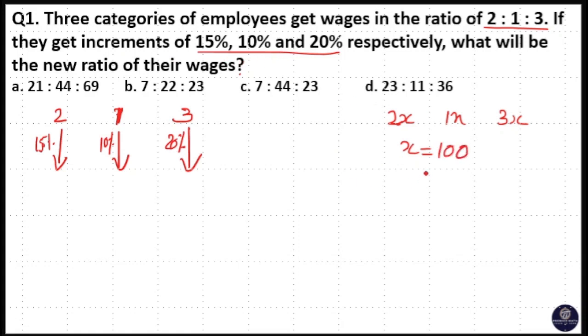Here they are asking us about the ratio, so you will get the same answer. Putting x value means multiplying the ratio with 100, that is 200, 100, 300.